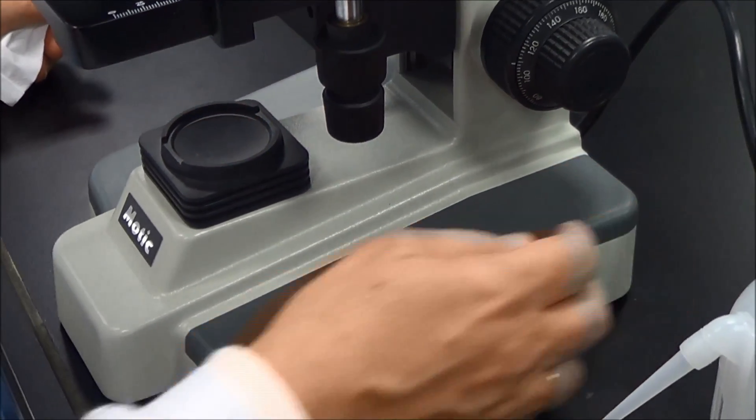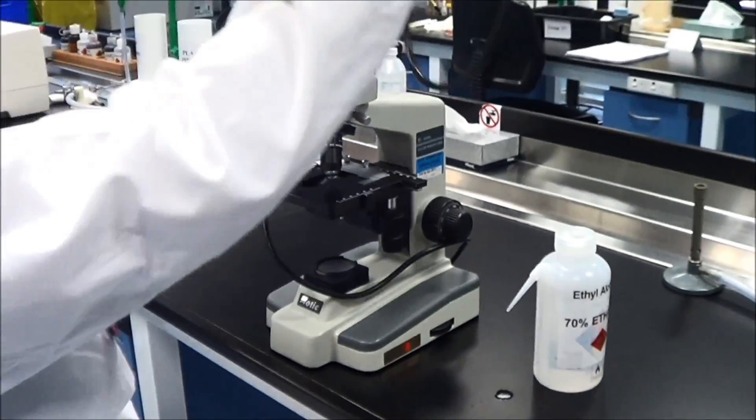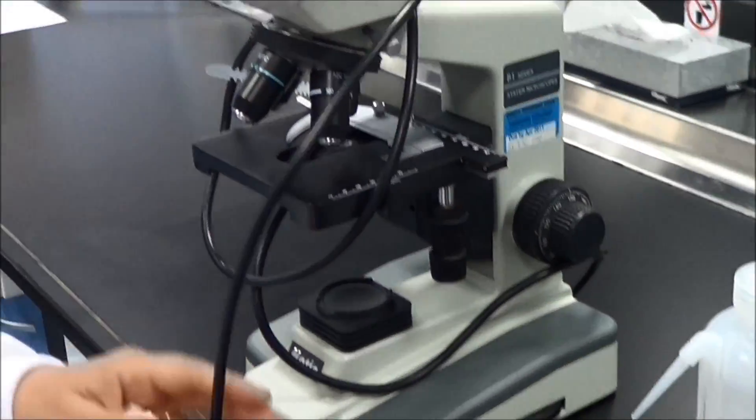To pack away the microscope, turn off the light, loosely wind the power cord around the microscope, replace the cover and put it carefully back into the cupboard.